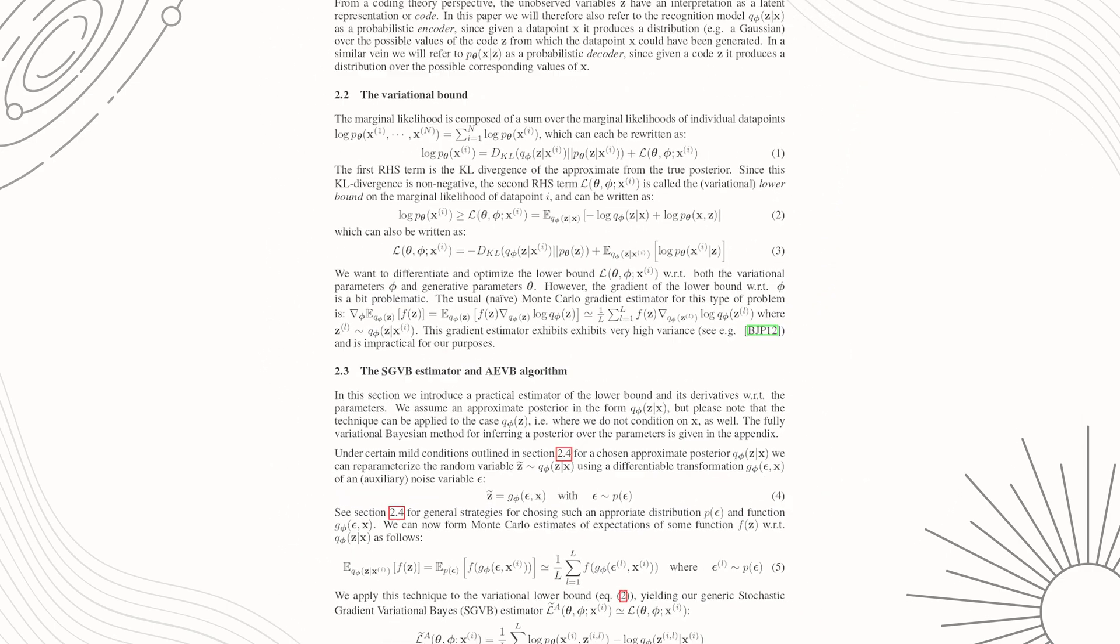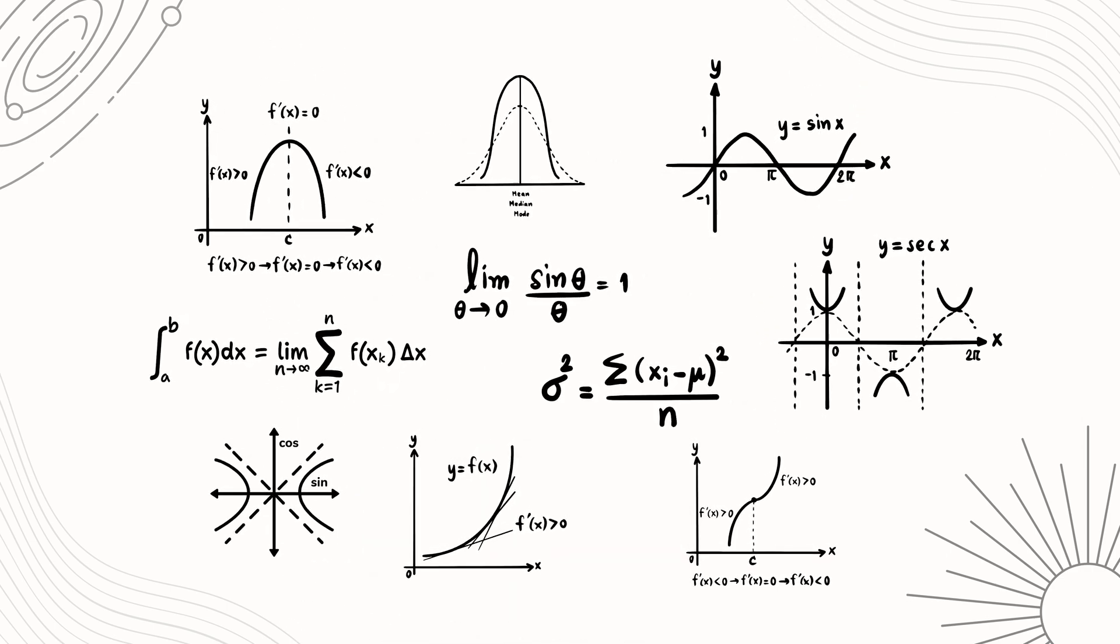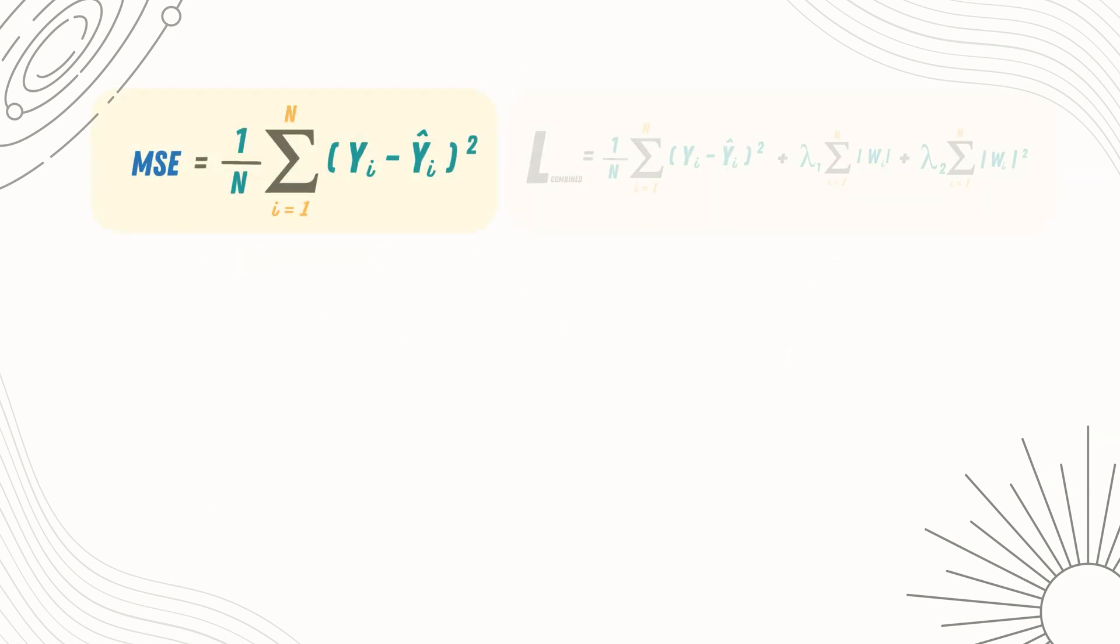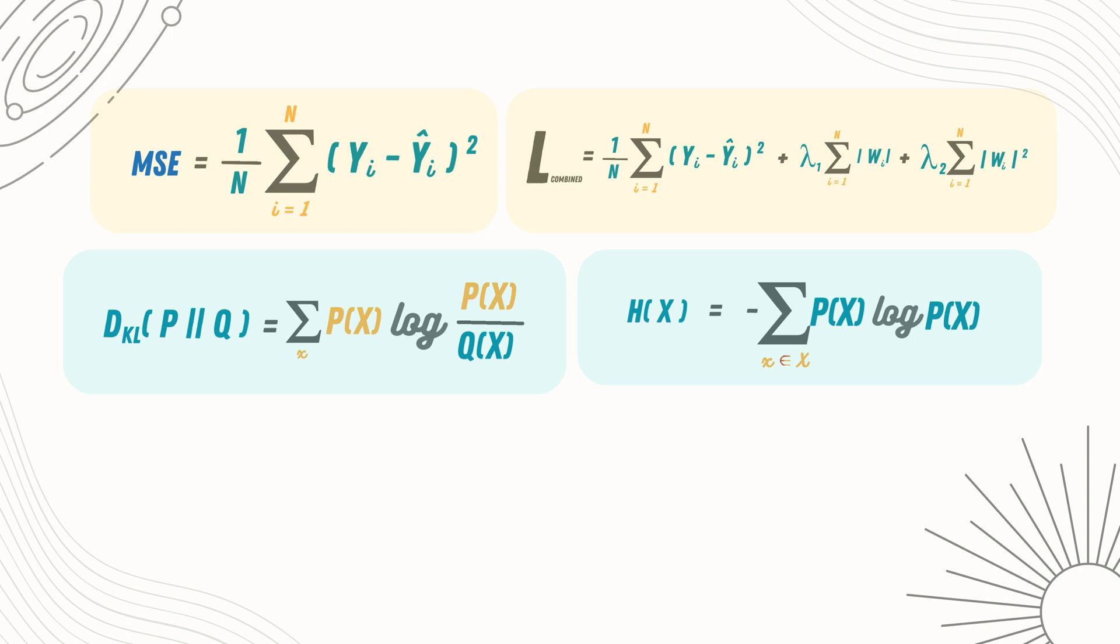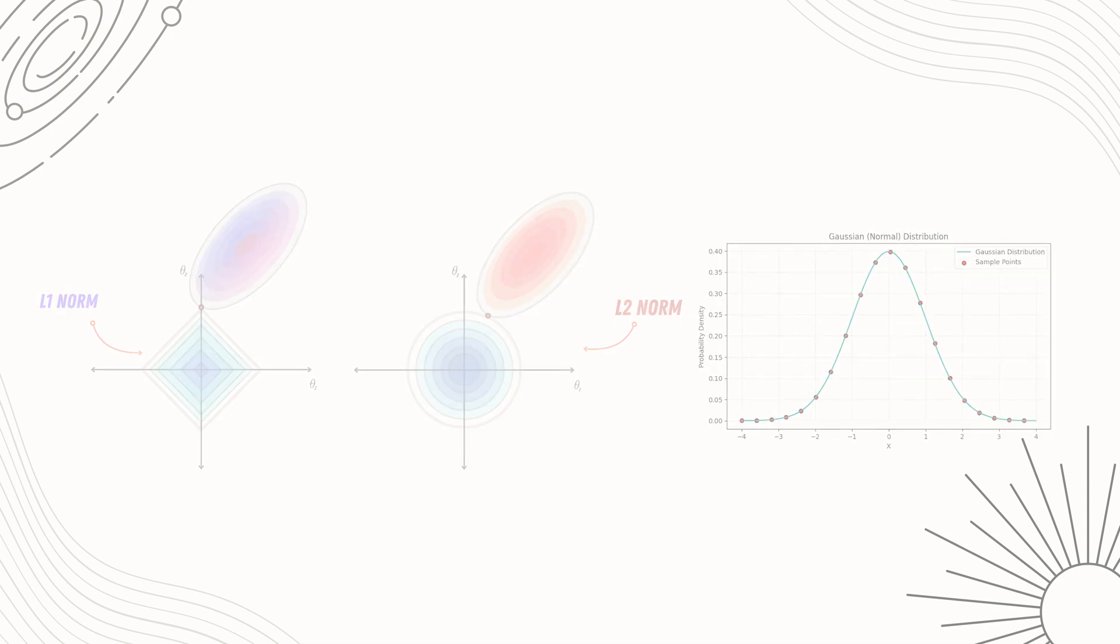But if you take a step back, you'll realize that most of these papers rely on just a handful of fundamental functions. In this video, we'll break down five key functions you'll encounter again and again, whether in machine learning, optimization, or physics. By the end, you'll not only recognize these functions but also develop an intuitive understanding of them. Let's begin.